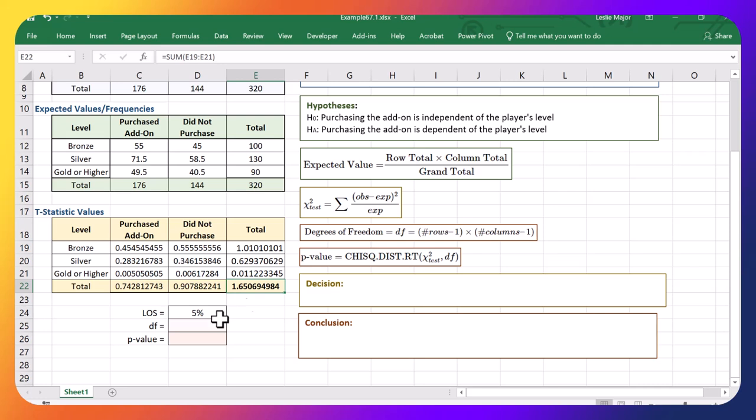Next is my degrees of freedom. This is where I take my number of rows minus one times my number of columns minus one. So I have one, two, three rows of actual data. Don't count the headers, don't count the totals. Just look at how many rows of actual data you have. So in this case, three. And minus one from that for the degrees of freedom. And then times by the number of columns minus one. So I have two columns. So minus one from that. And that gives me two.